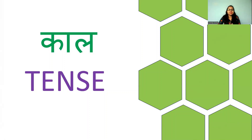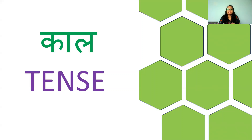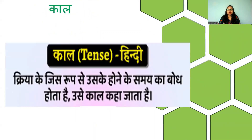Actually, Kaal means time. We should know when the action has happened. For example, I am talking now, I am speaking, you are listening — so this action is happening at present. So we know the time that this is happening at present. So what is Kaal, children? You will see: Kriya ke jis roop se uske hone ke samay ka bodh hota hai,